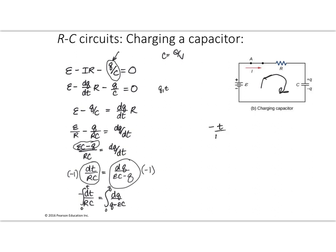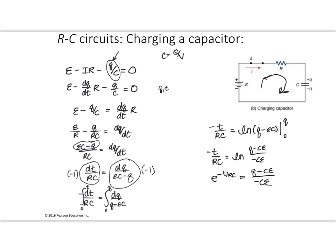On the left-hand side, I get minus t over RC. On the right-hand side, I get the natural log of q minus EC, evaluated at my ending point and starting point. This gives us: minus t over RC equals the natural log of (q minus CE) over (minus CE). That comes from evaluating at both limits and using the property that the subtraction of natural logs equals the natural log of the quotient. Using the definition of the natural log, we get: e to the minus t over RC equals (q minus CE) over (minus CE).